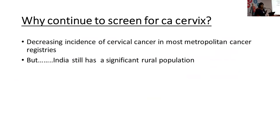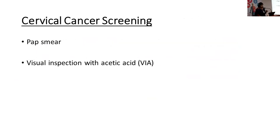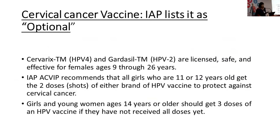Despite Western data, we still screen for cervical cancer in India because we have a large rural population. In metropolitan cancer registries, cervical cancer incidence is decreasing while breast cancer is increasing; but rural registries still show high cervical cancer incidence. Routine screening is by Pap smear, which may not be accessible at primary healthcare level. A Tata Memorial Hospital trial looked at Visual Inspection with Acetic Acid (VIA), performed by social workers in a slum community in and around Mumbai.